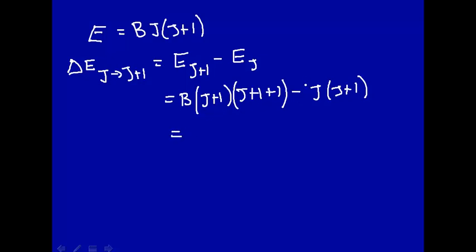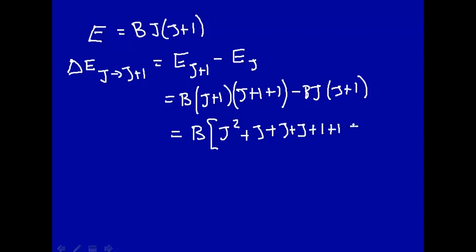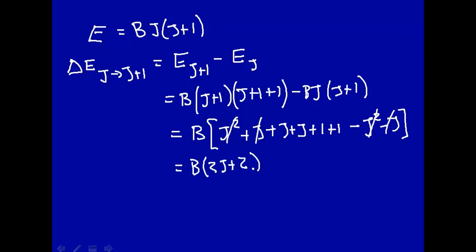Multiplying out, we take out B and expand: J² + J + J + J + J + 1 + 1 minus J² minus J. The J² terms cancel, and combining remaining terms gives B times (2J + 2), or in other words 2B times (J+1). This tells you the energy level separation when you start from J and go to J+1.